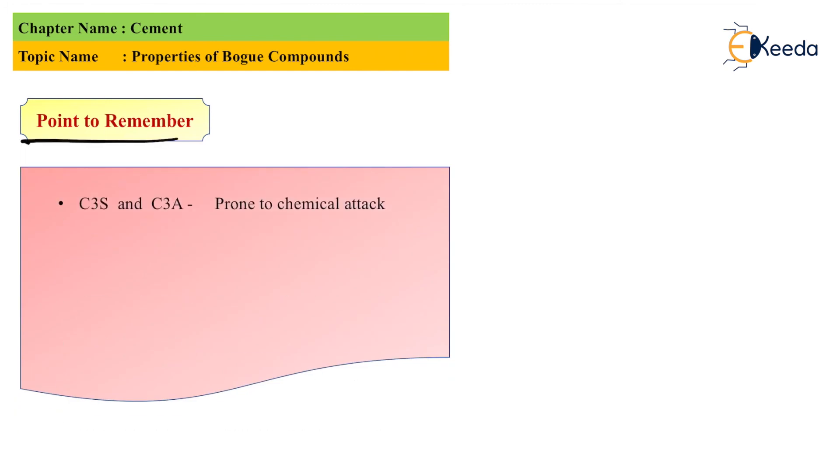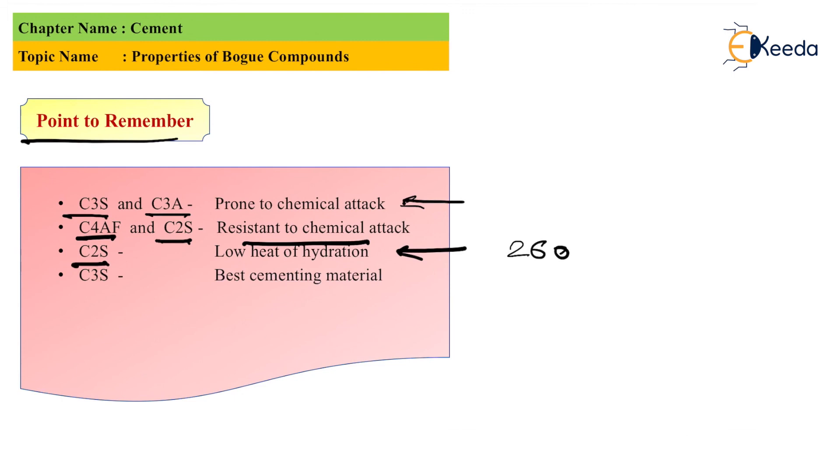The points to remember are: C3S and C3A are prone to chemical attack. C4AF and C2S give resistance to chemical attack. C2S has low heat of hydration, that's 260. C3S has best cementing value. C4AF and C3A cause flash setting, and to prevent flash setting we must add gypsum 2 to 3 percent. C3A causes volume change and it might cause cracking.